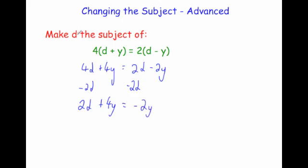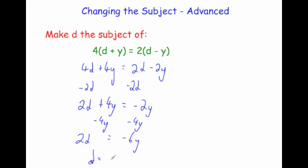We want to get d on its own, so let's get rid of the plus 4y by taking away 4y from both sides. That leaves 2d on the left hand side. 4y take away 4y is 0, and minus 2y take away 4y is minus 6y. We want d on its own, so let's divide by 2, giving d equals minus 3y.